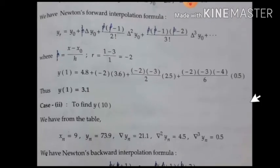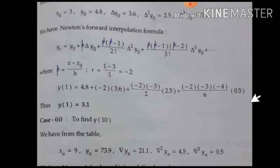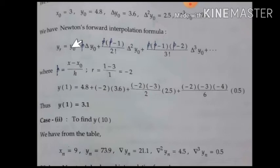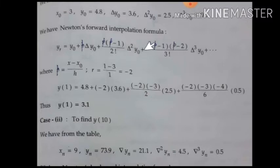You should know both interpolation formulas. We use Newton's forward interpolation formula to find the y value at x = 1. The formula is: y = y₀ + p·Δy₀ + p(p−1)/2! · Δ²y₀ + p(p−1)(p−2)/3! · Δ³y₀, and so on with higher-order differences.